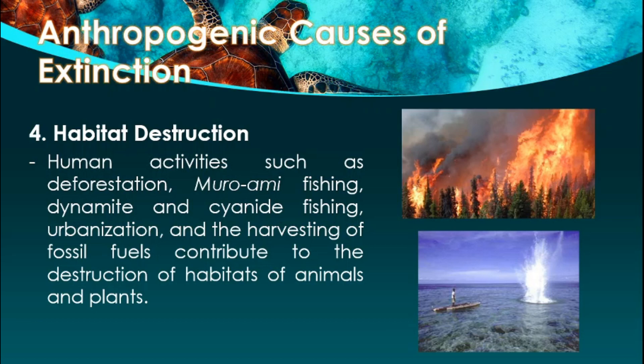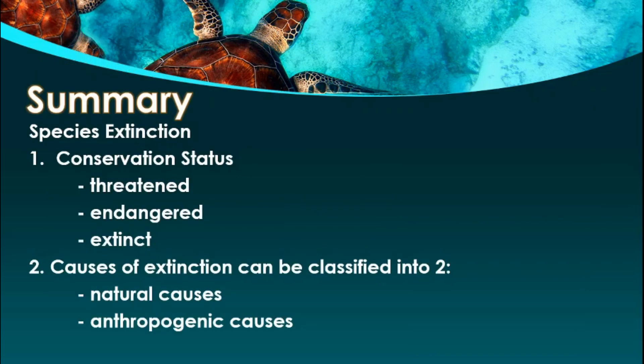So those are the different causes of extinction of different species. To summarize, we talked about different conservation statuses, focusing on threatened, endangered, and extinct. We also discussed the causes of extinction, classified into natural causes and anthropogenic, or man-made, causes.